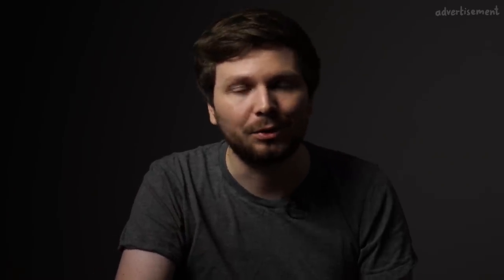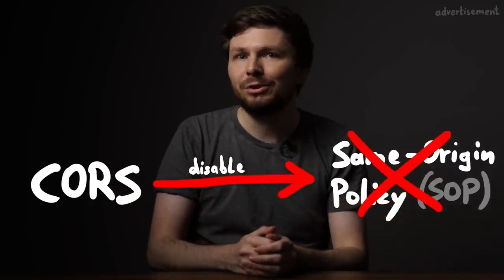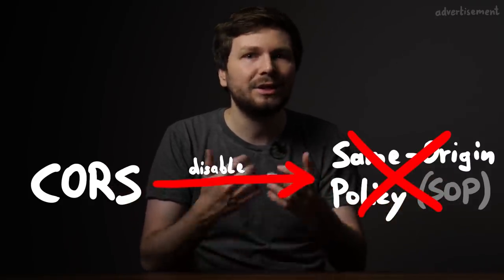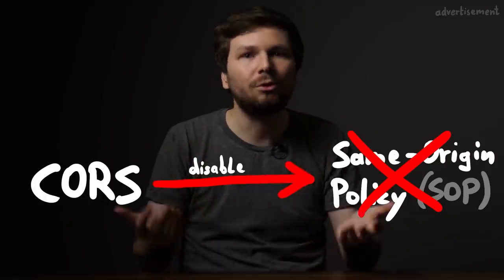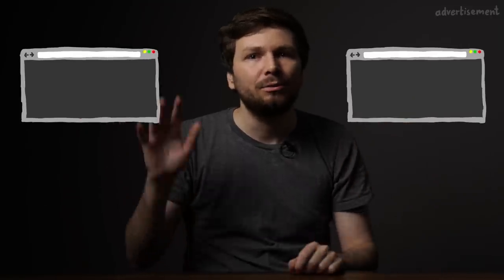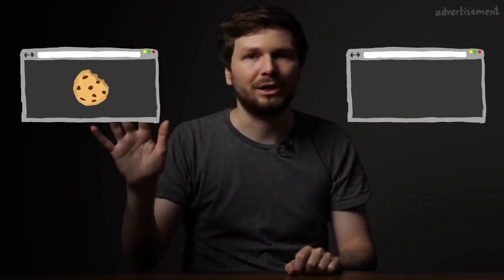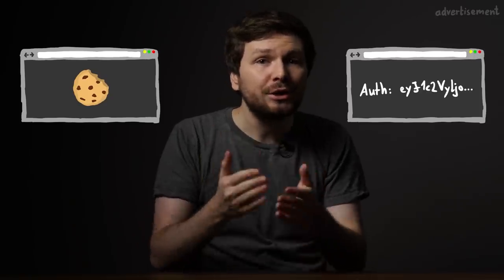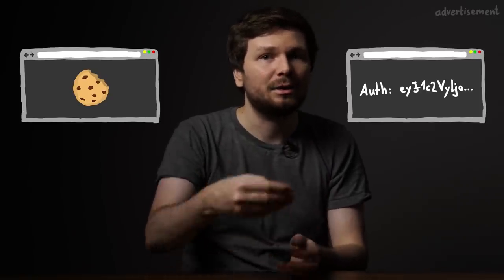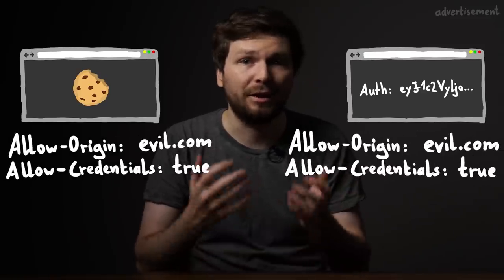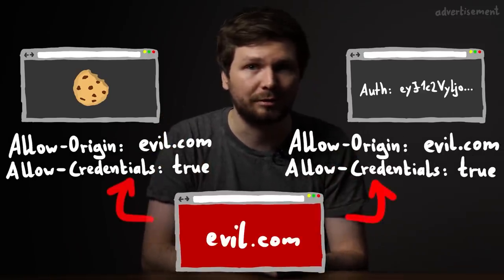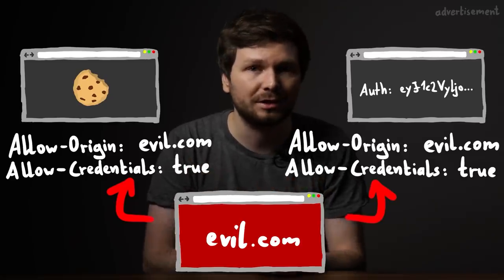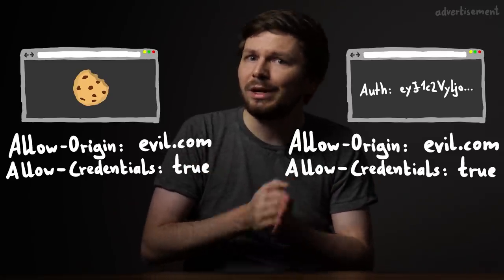At first sight this seems to weaken the same-origin policy - which it does. So why would anybody do that? Is there any negative security impact? It of course depends. Let's imagine two websites: one uses cookie authentication with a session cookie, and the other has token authentication where for each request the code adds an authentication header with a token. Both websites have very permissive CORS settings, allowing arbitrary origins to make requests and even allowing credentials. Is this a security issue in both cases?